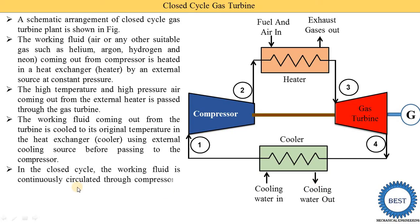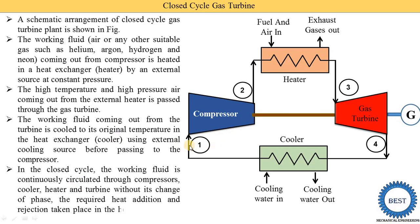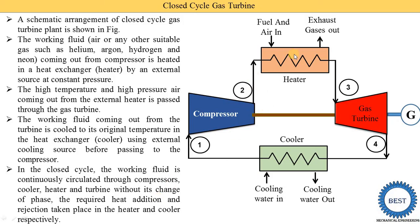In the closed cycle, the working fluid is continuously circulated through the compressor, heater, turbine, and cooler without any change of phase — it remains in the gas state throughout all components. The required heat addition and rejection take place in the heater and cooler respectively. In the heater the working fluid gains heat energy, and in the cooler the working fluid rejects heat energy.